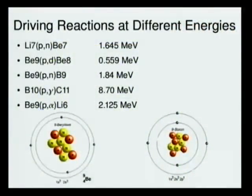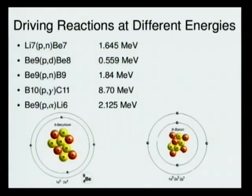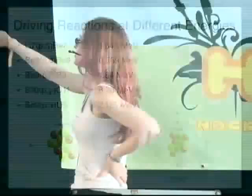Showing that graphically: you have beryllium-9 with 5 neutrons and 4 protons. You put in an additional proton that knocks out a neutron — so now there are 5 protons and the 9-boron ejects a neutron, leaving boron-9. So that's the type of reaction you'd be able to drive with these energies. It's transmuting light elements.